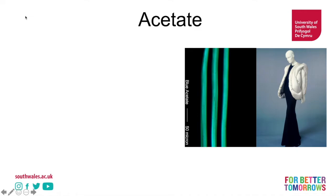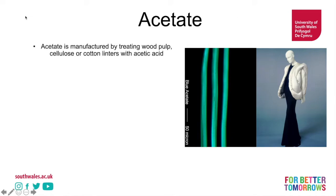Next up we have acetate. Here's a Charles James evening coat from 1937, which is stuffed with goose down — so it's a mix of semi-synthetic and natural fibers — again from the Victoria and Albert Museum. You can see the acetate under the microscope is very smooth, similar to our other semi-synthetics. Acetate is manufactured by treating wood pulp cellulose or cotton linters with acetic acid.